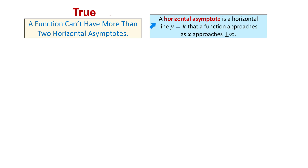A horizontal asymptote is a horizontal line of the form y equals a real number k that the function approaches as x approaches positive or negative infinity.